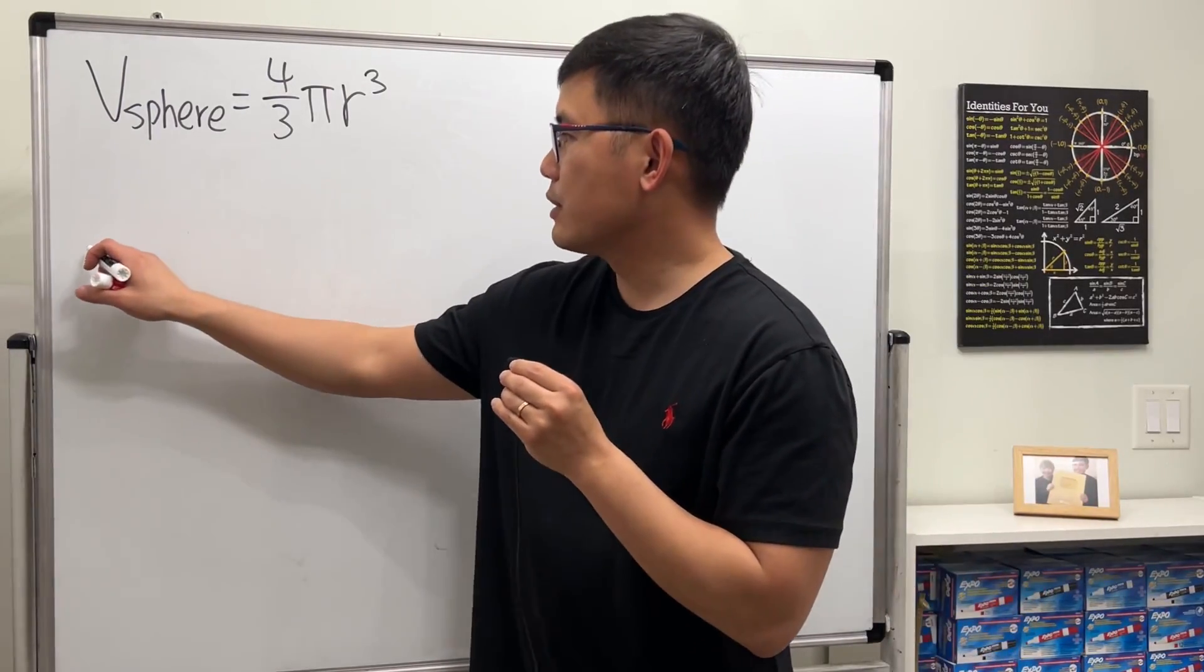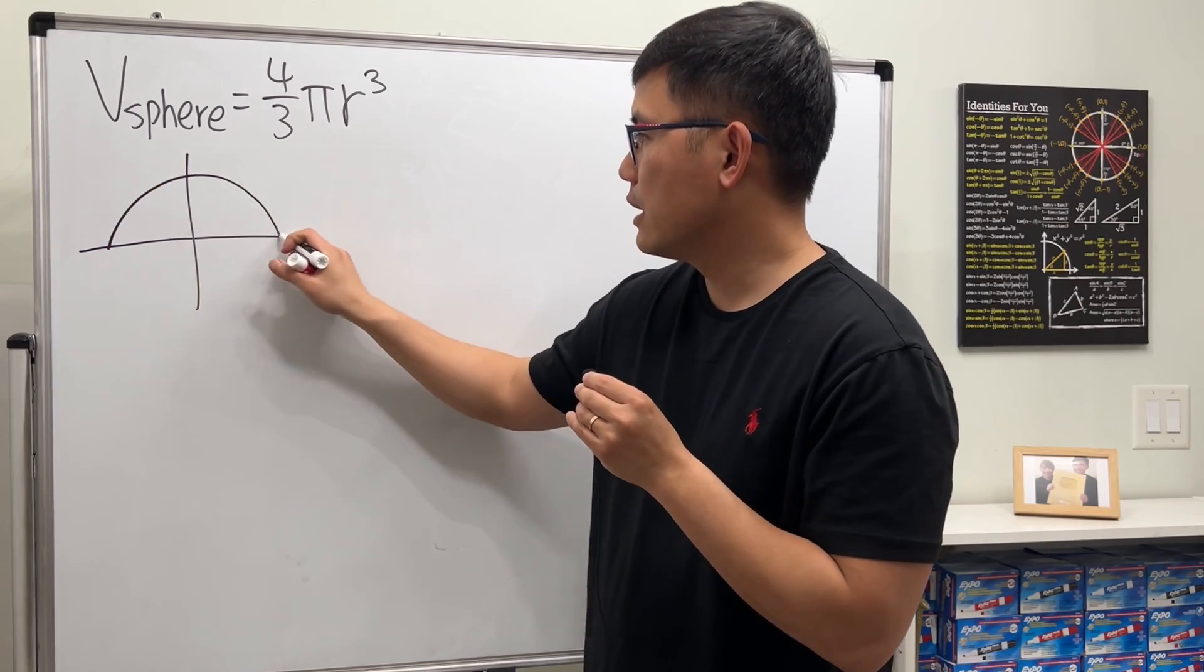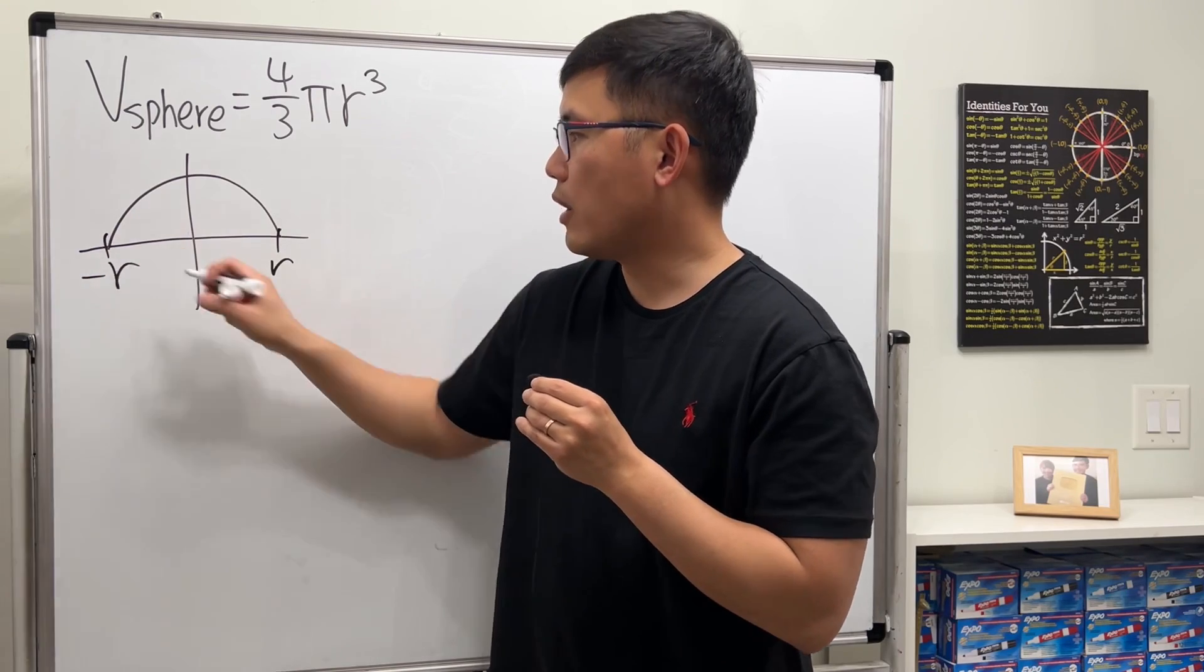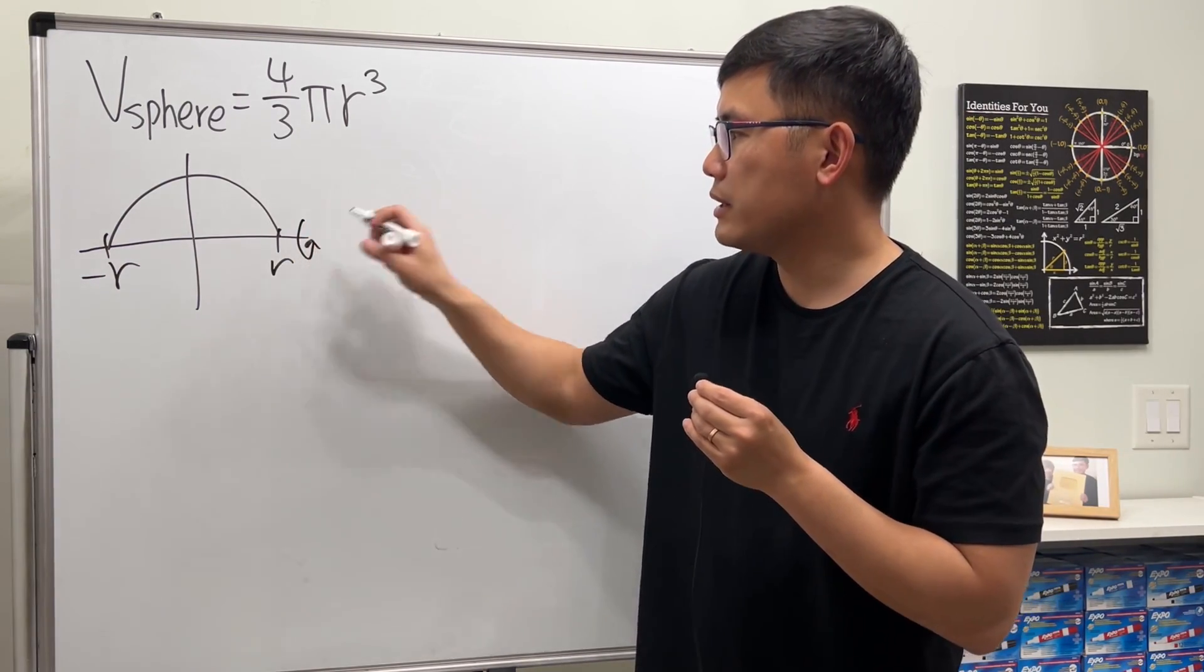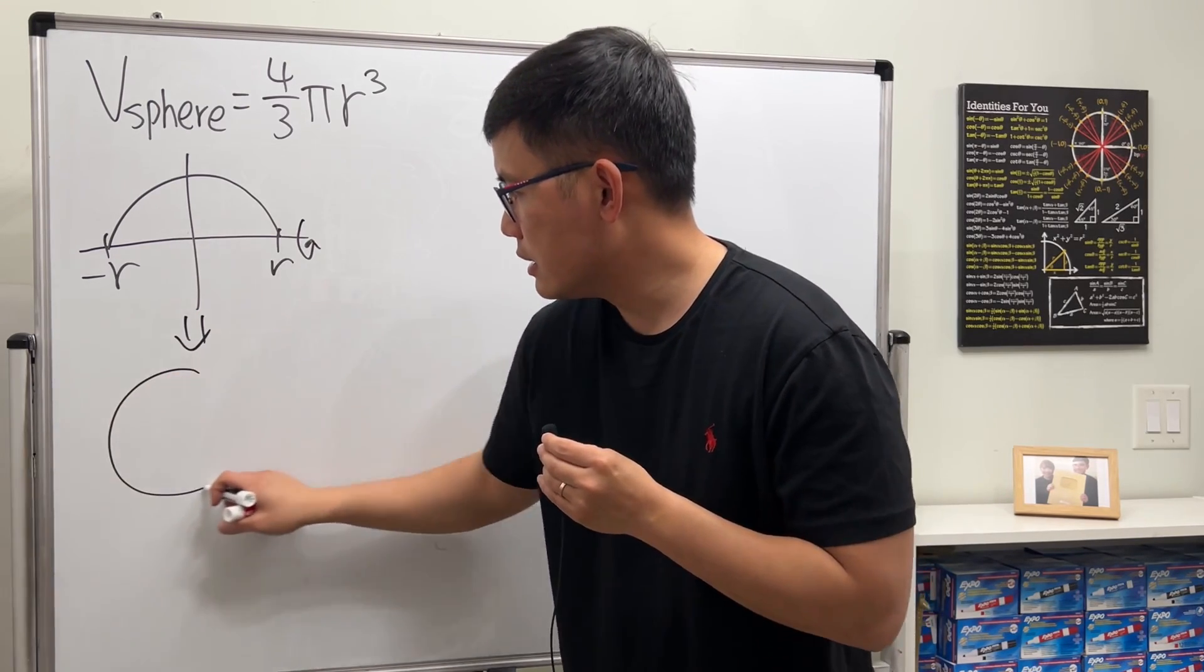Okay, so I'm just going to draw this right here for you. We start with a sphere like this. Let's say the radius is r, so we go from -r to r. And then we do a rotation about the x-axis. This way, we get our sphere.